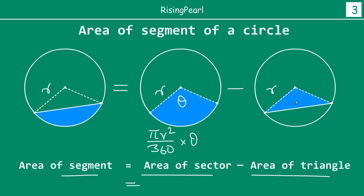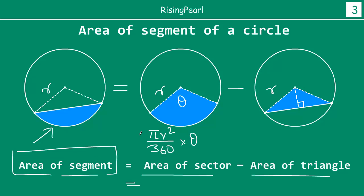The area of the triangle depends on knowing the perpendicular height and the base, so there is no standard way to express it purely in terms of r and theta. That is why, when we talk about area of a segment, we do not have a single formula the way area of a sector does. It is a conceptual approach: area of a segment equals area of the sector minus area of the triangle. Whenever we need to compute it, we find the sector area, find the triangle area, and subtract.